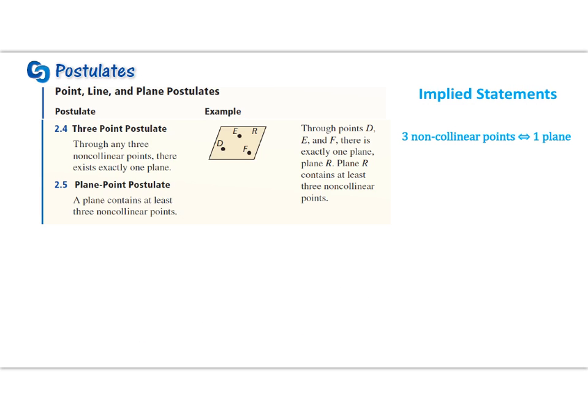All right, now you try. So take these two postulates kind of together – they're kind of about the same thing. Through any three non-collinear points, there exists exactly one plane. So break it down. What's the if part and the then part? Replace the words with an illustration. So pause the video here and try this one on your own.